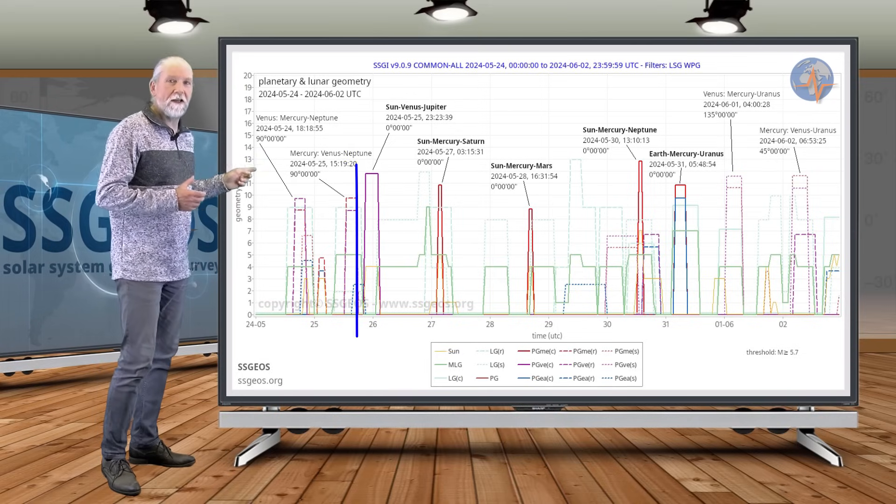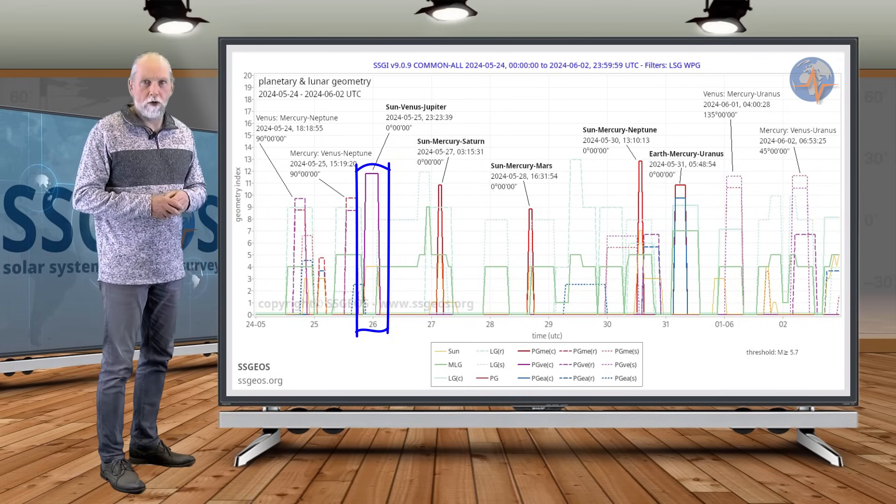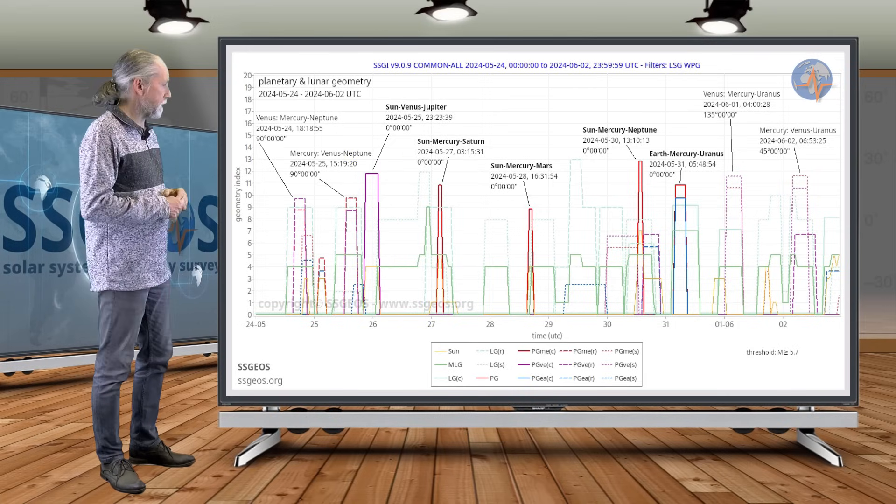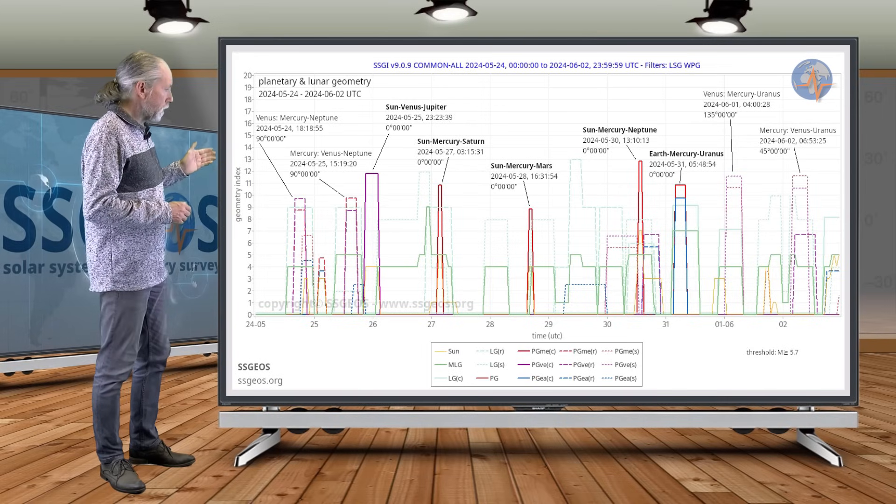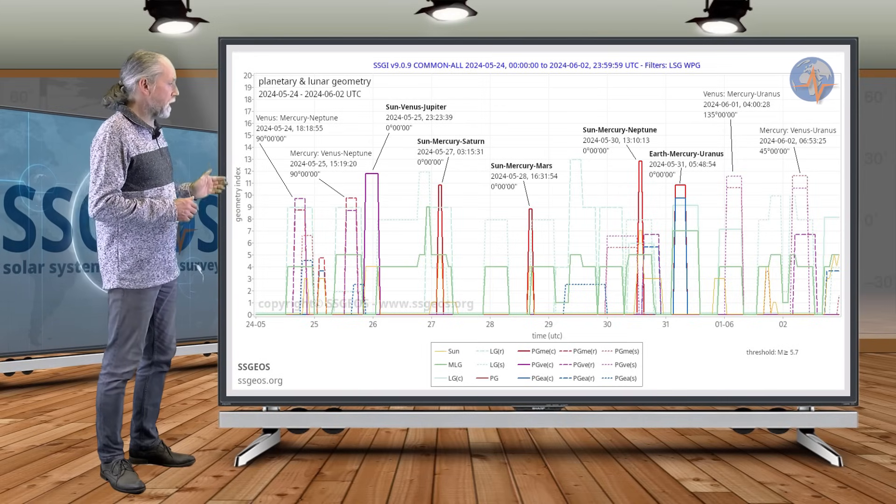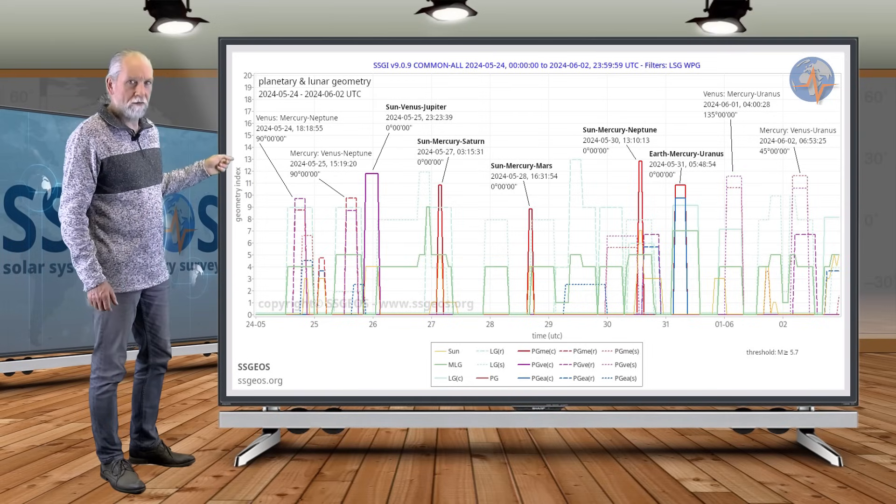Then also tonight, Sun-Venus-Jupiter. And that can also be an important marker for increased seismic activity. And that comes on top of the right angle geometry involving Venus. So we could see an obvious seismic increase around the 27th as a result of that planetary geometry involving Venus.